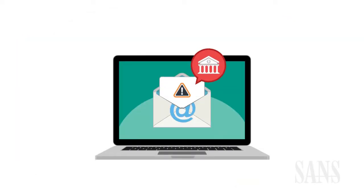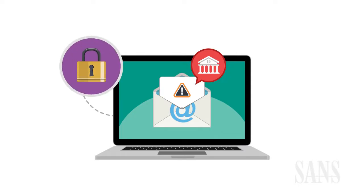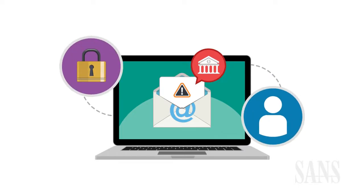Let's say you get an urgent message from your bank. Your account has expired and is about to be locked, so you have to update your account information. You call the number in the message, and an automated system asks you to answer some questions to prove your identity.